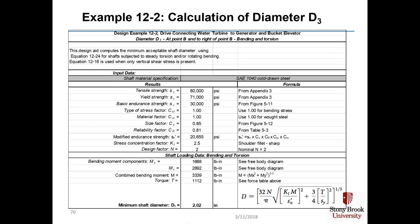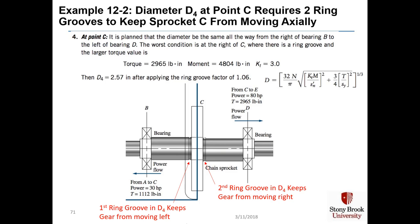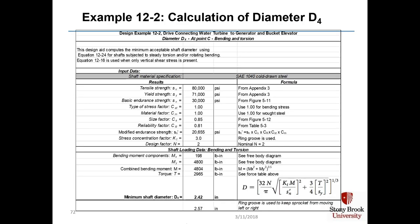The moment values are getting large and we still have our torque, using a stress concentration factor KT equal to 2.5. Diameter D4 at point C requires two ring grooves to keep sprocket C from moving axially — similar to the situation at point A. We have the highest torque and moment levels in this shaft, and KT equals 3.0, so we expect a large diameter. D4 turns out to be 2.57 inches after applying the ring groove factor of 1.06.